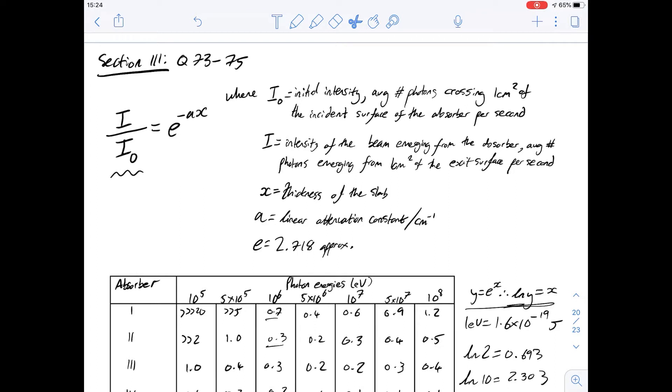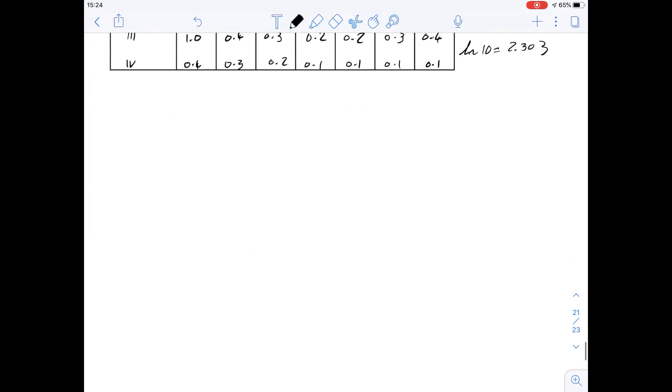This is a question about the attenuation of an x-ray passing through an absorbent material. There's quite a lot of information which I've copied out here and question 73 asks which of the following is closest to the thickness of absorber required to stop half the photons from passing through an absorber with an attenuation coefficient of 0.2 cm. So we're given a lot of the information we need. It's a simple matter just putting the numbers into our equation here and this is the equation we've been given which is I over I₀ equals e to the minus ax.